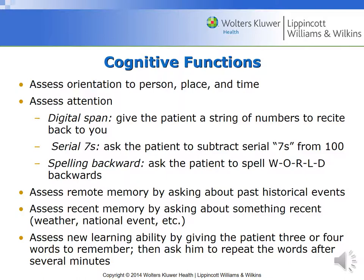To assess the ability to learn something new, give the patient three or four words to remember. Then move on to another topic and return after about three to five minutes to ask them to repeat those words. Note the accuracy of the response, the patient's awareness of whether their answer is correct, and any tendency to confabulate or make things up. Normally, a person should be able to remember the words.